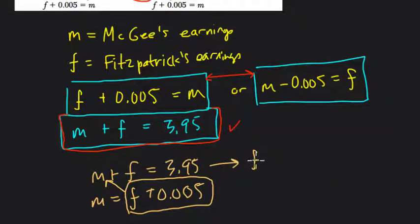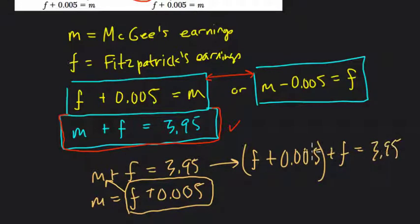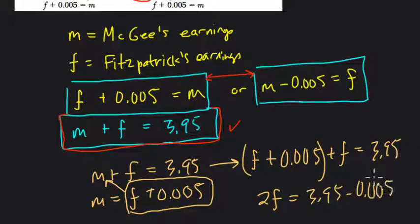And that gets me F plus 0.005, plus F, where we're on this equation, equals 3.95 million. F plus F is 2F, and then that's going to equal 3.95 minus 0.005 million.